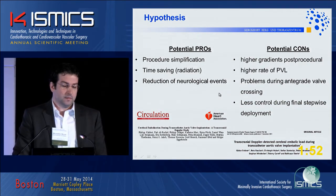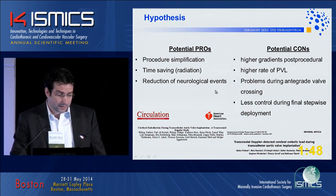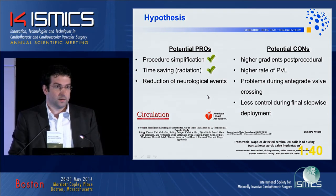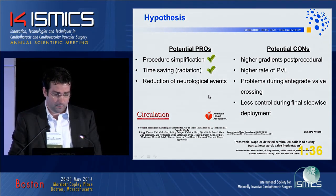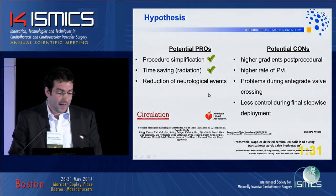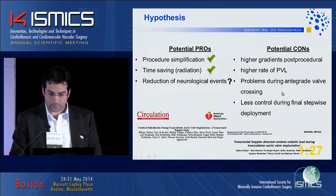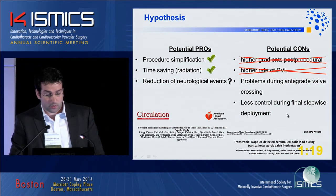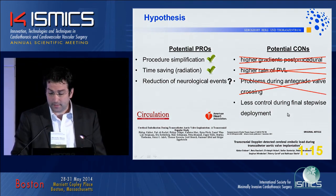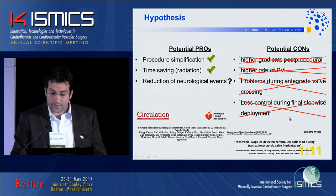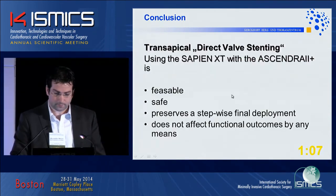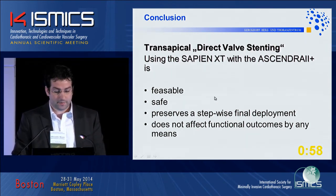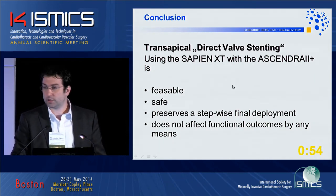To summarize: for the potential pros, the omission of one additional step leads to procedure simplification. Radiation time was lower in patients with BAV omission, which is beneficial for operators and patients, and it might lead to a reduction of neurological events. For the potential cons, we did not observe post-procedural higher gradients, higher rates of paravalvular leakage, any issues with antegrade valve crossing, or less control during final stepwise deployment. In conclusion, transapical direct valve stenting using the Sapien XT with the Ascendra 2 Plus device is feasible, safe, preserves stepwise final deployment, and does not affect functional outcomes. Thank you.